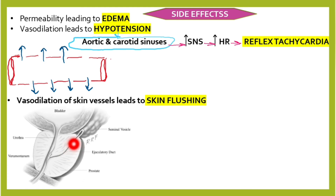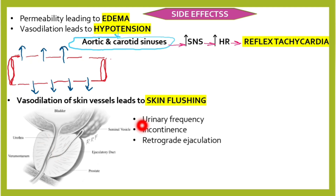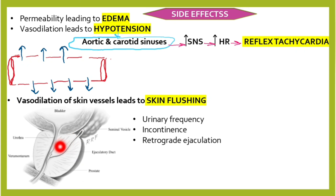Looking at the urinary system — the urinary bladder, urethra, prostate, ejaculatory duct, and seminal vesicles — in the case of prostate enlargement we have dilated the urethra by inhibiting alpha-1 receptors. Side effects can include urinary frequency and urinary incontinence, because we have relaxed the internal urethral sphincter.